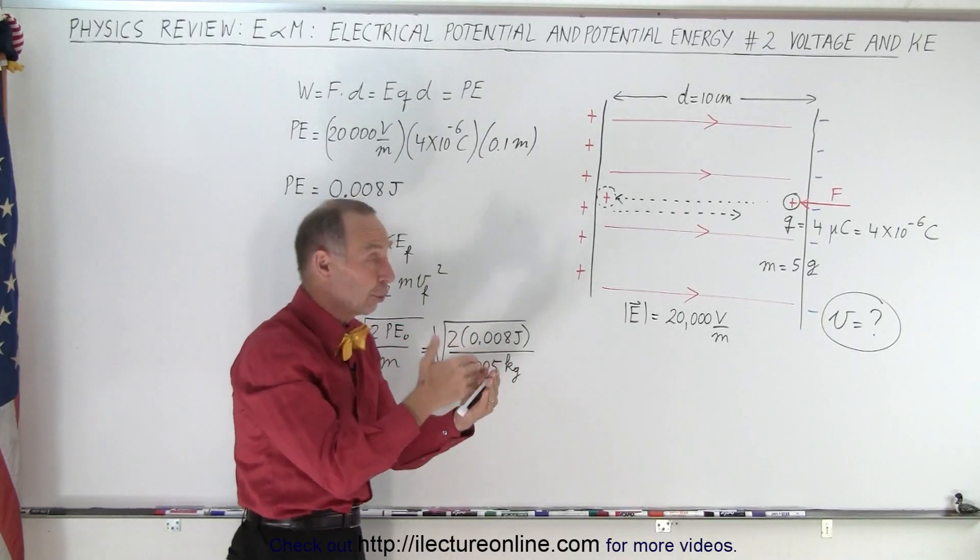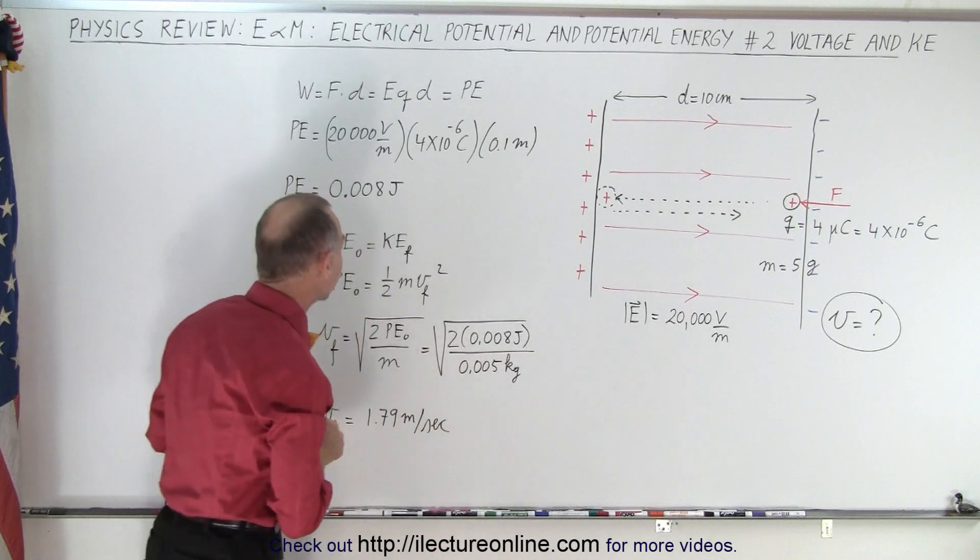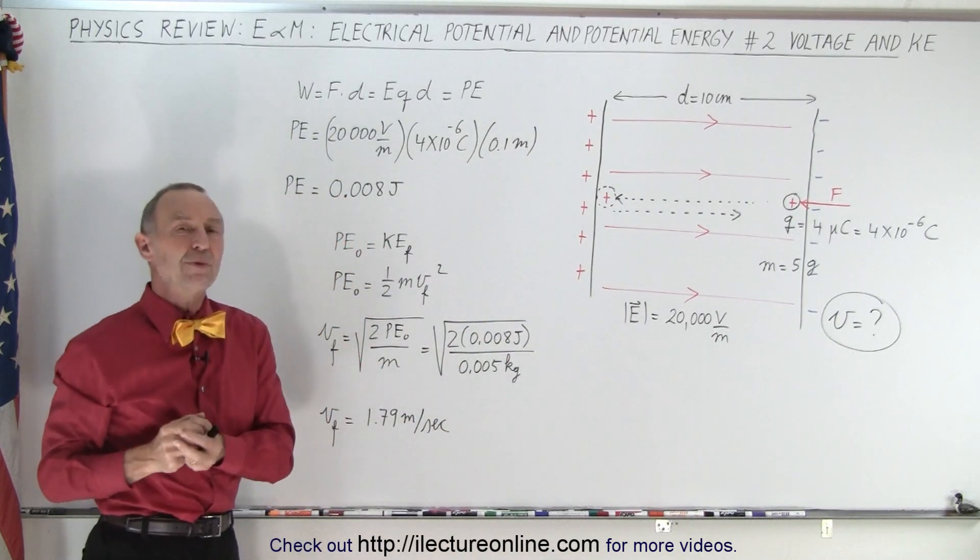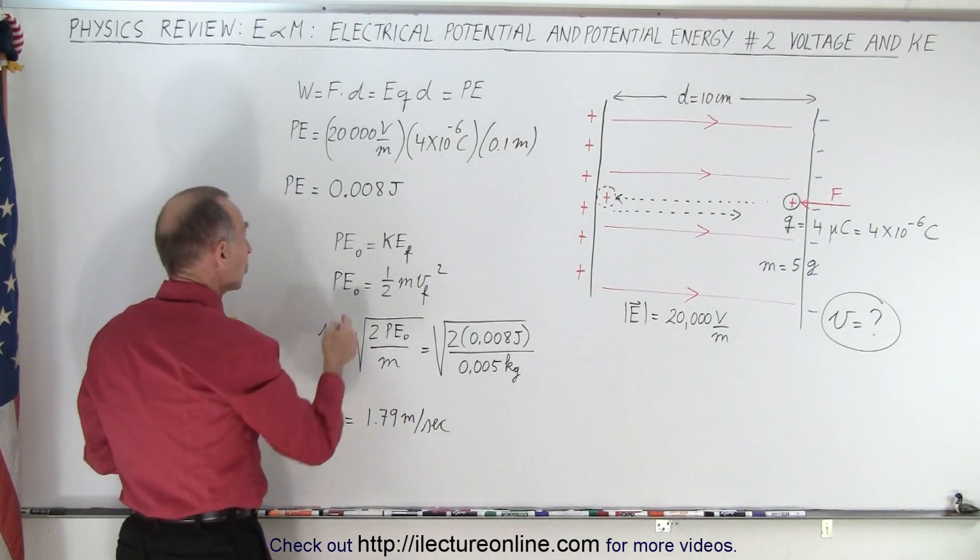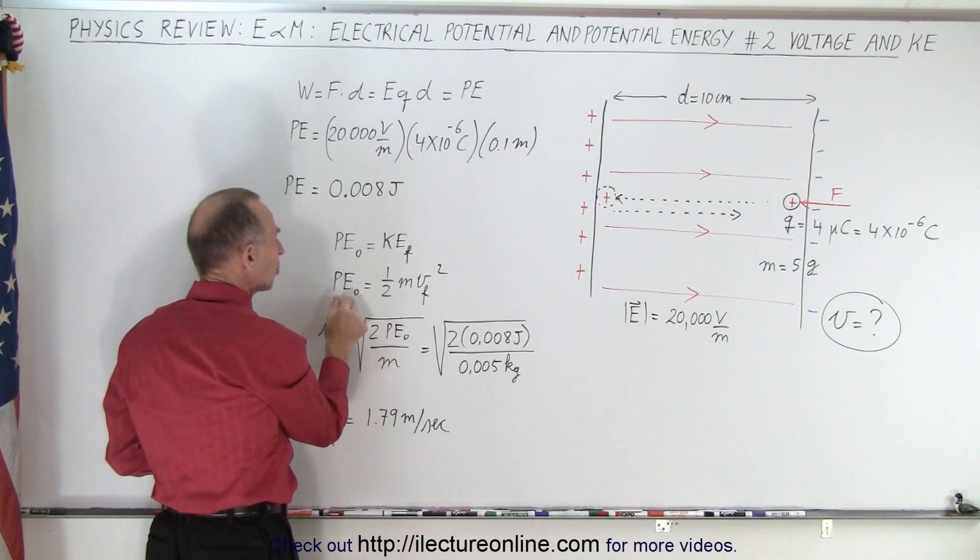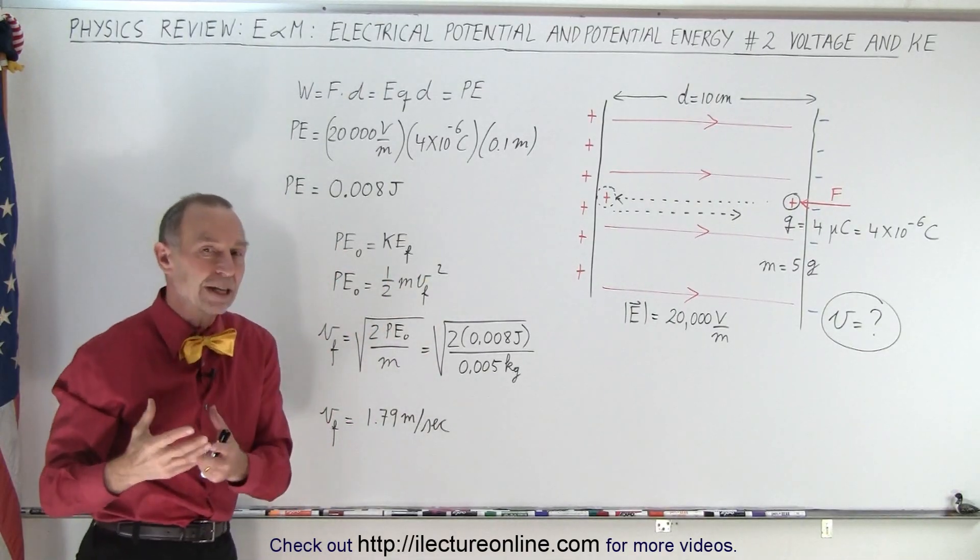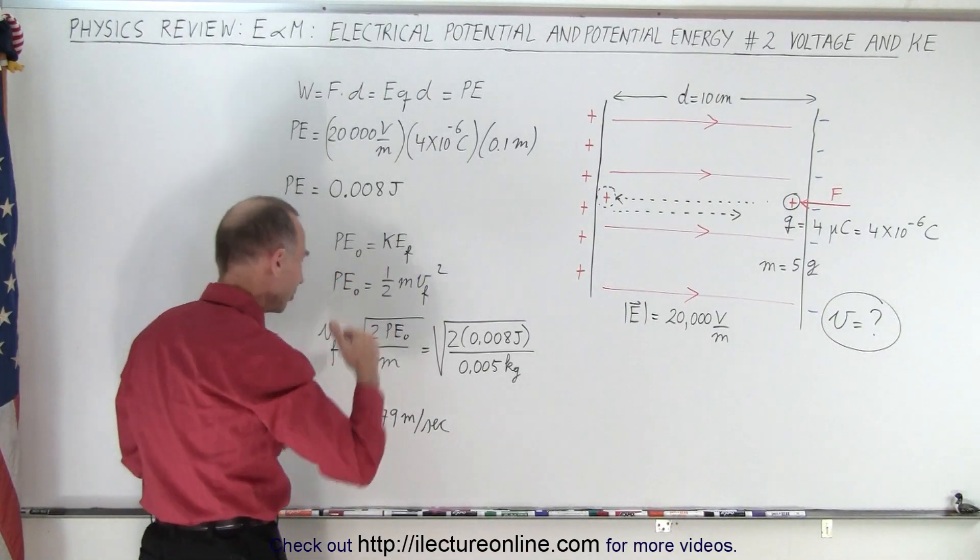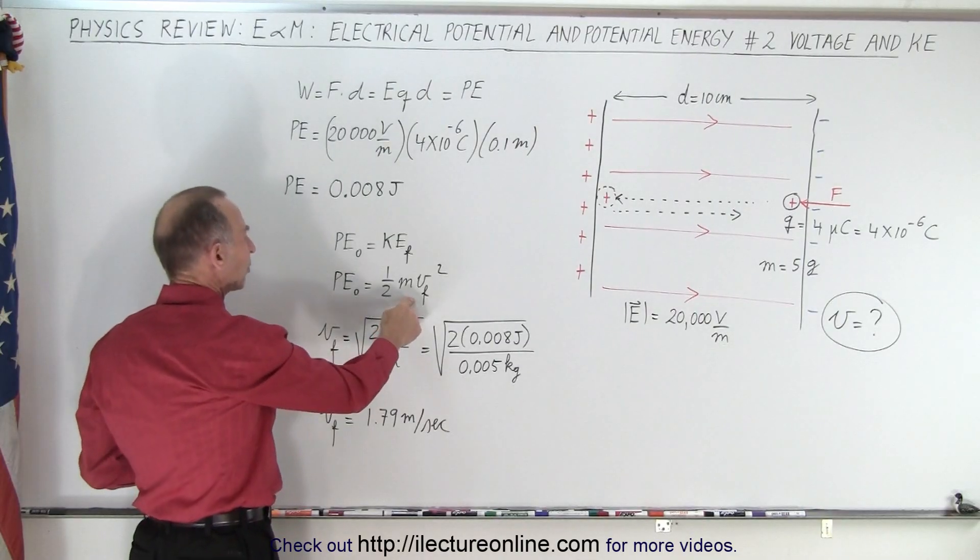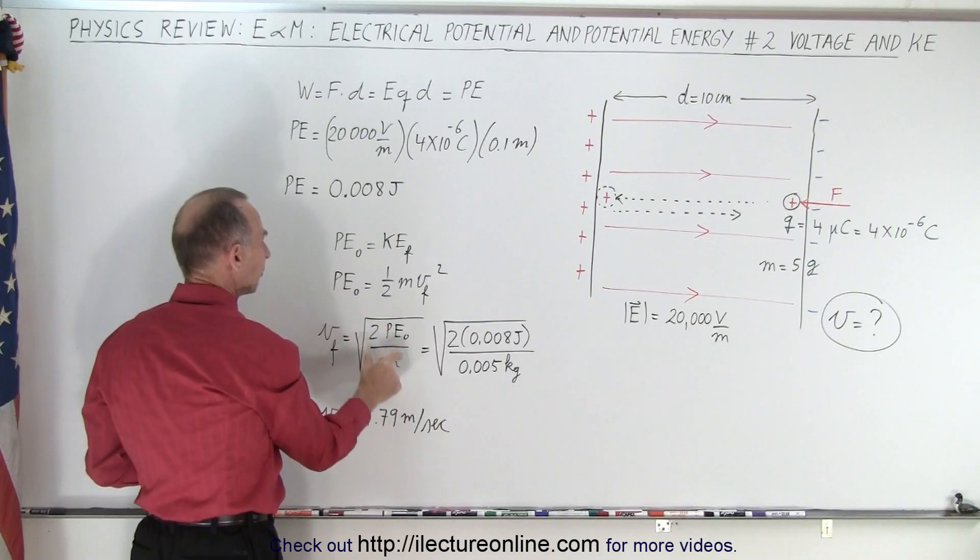And just before it hits the floor or just before it hits the other side of the capacitor, that capacitor plate, how fast will it be moving? And so we use the equation where the initial potential energy will then turn into final kinetic energy. So the initial potential energy will equal one half mv squared. And we're trying to find that v, that final v before it hits the target. So when we solve this equation for v, we get the square root of two times the potential energy divided by the mass.